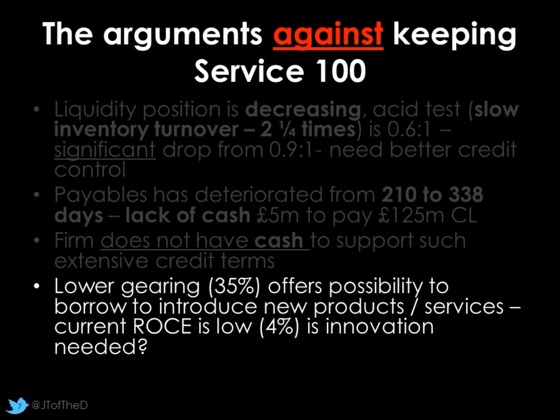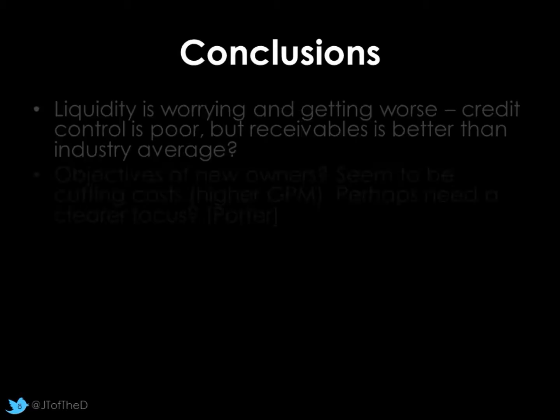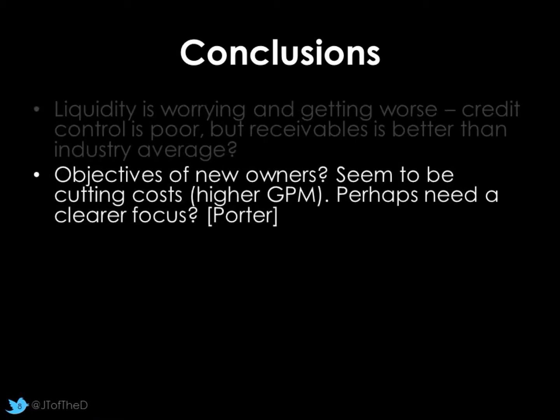In conclusion: liquidity is worrying and getting worse, and credit control is poor. However, receivables are better than the industry average, so Service 100 isn't a complete disaster — it hasn't spiralled into massive bad debts. We need to consider the objectives of the new owners: where do they want to go? Are they a company renowned for lower costs, innovation, or something different? You could bring Porter in here — we don't want to sit in the middle ground. There's evidence that the gross profit margin is getting better, suggesting we're buying things cheaper. So do we go further in that direction, or come out with something new?